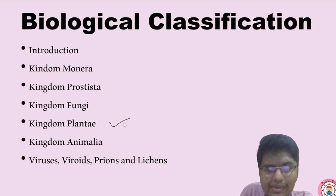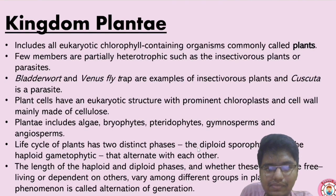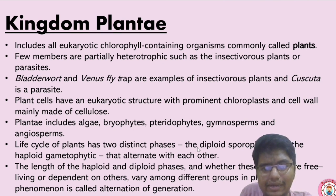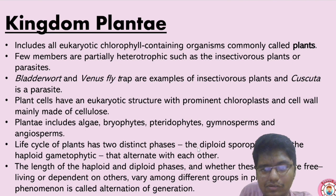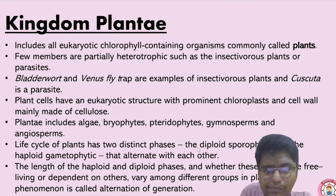Basically kingdom Plantae, kingdom Animalia, and viruses, viroids, prions, and lichens. Kingdom Plantae and kingdom Animalia we are going to discuss separately in the further chapters. In this chapter we are just seeing an overview, or we can say the introduction part. Kingdom Plantae is discussed in chapter 3 and kingdom Animalia is discussed in chapter 4.